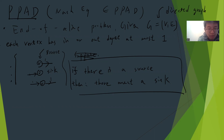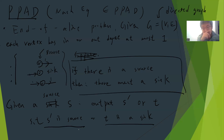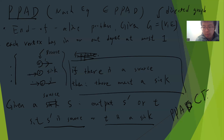So the problem should be set this way: given a source S, you need to output S' or T' such that S' is a source or T' is a sink. This is the problem. And obviously PPAD is also in TFNP because there is always a solution.